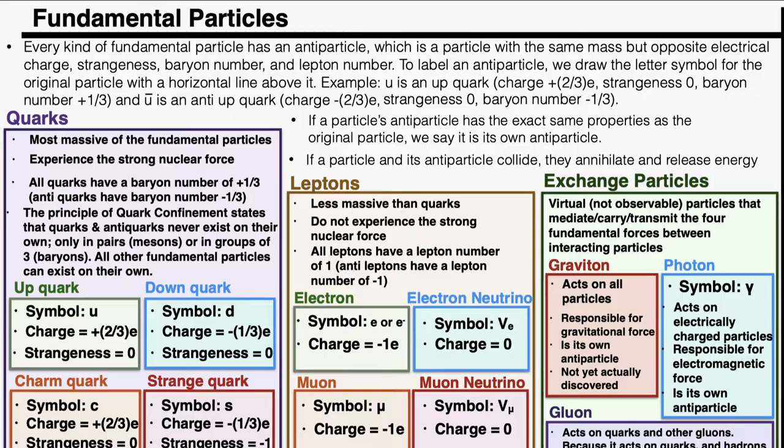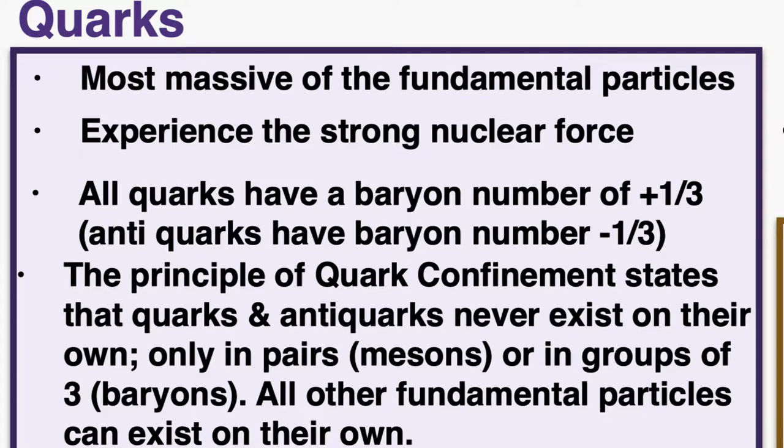The first fundamental particle type is quarks, which are the most massive of the fundamental particles. They make up hadrons like protons and neutrons, and they experience the strong nuclear force. All quarks have a baryon number of +1/3, and anti-quarks have a baryon number of −1/3. The principle of quark confinement states that quarks and anti-quarks never exist on their own — they only exist in pairs or groups of three. All other fundamental particles can exist on their own.